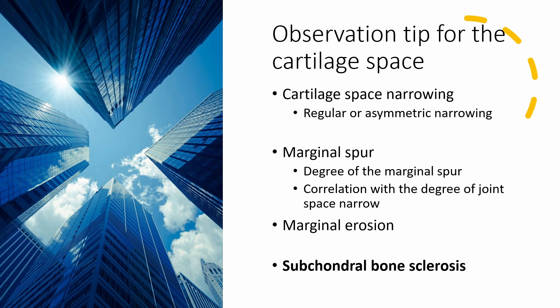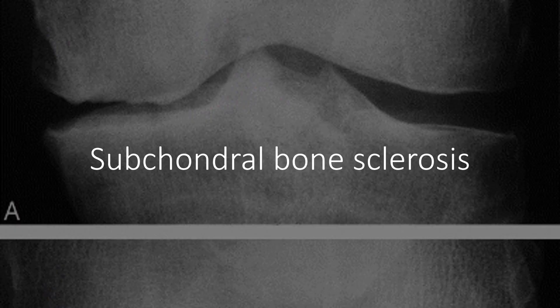We've so far delved into various aspects of this category, including joint space narrowing, both symmetrical and asymmetrical, formation of marginal spurs, and marginal erosion. Next, our focus shifts to subchondral bone sclerosis.